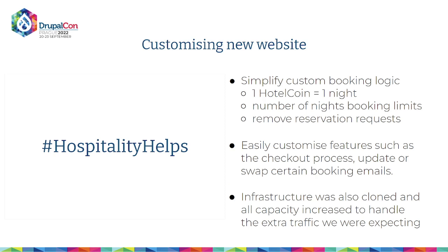The main thing we needed to do was simplify it as much as possible so that people under stress could easily find what they needed and start the booking flow. We simplified the booking logic by making everything one Hotel Coin equals one night, so there's no seasonality or hotel categories like one star or five stars — it doesn't matter. We introduced a booking limit so everybody received five Hotel Coins on registration, which they could use for five nights in one hotel, or split across multiple hotels depending on where they were traveling through Europe. We removed the reservation request because they needed instant availability, to simplify and not overcomplicate things.